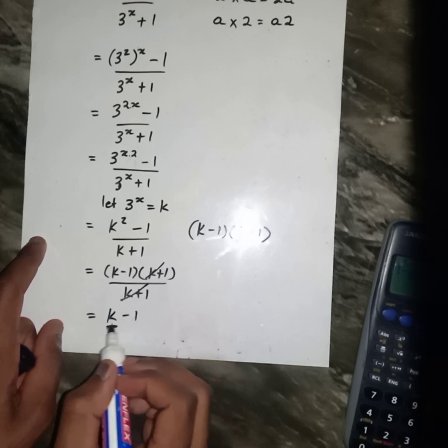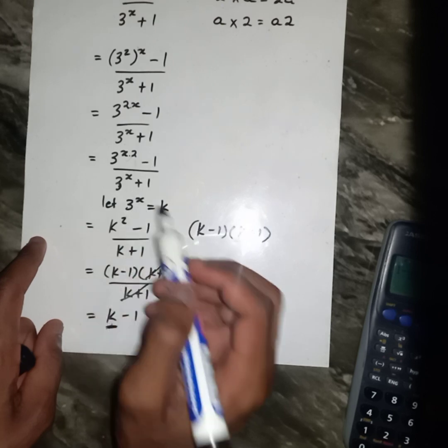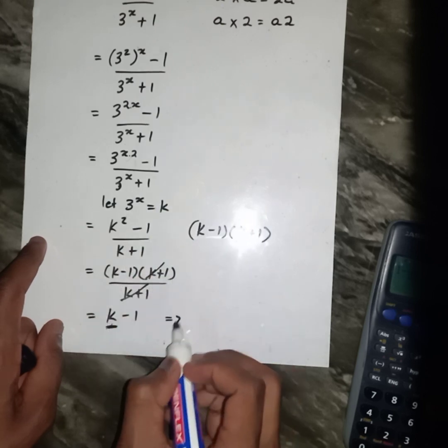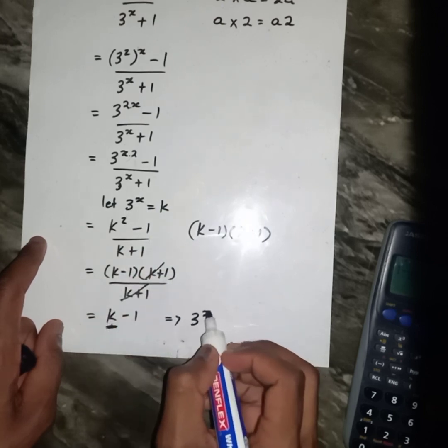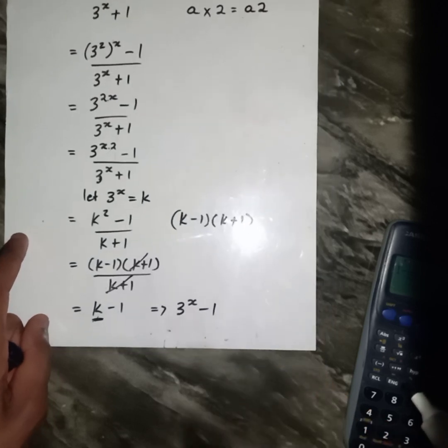But don't forget that k is 3^x. Then lastly, this is 1 now. I'm going to get...